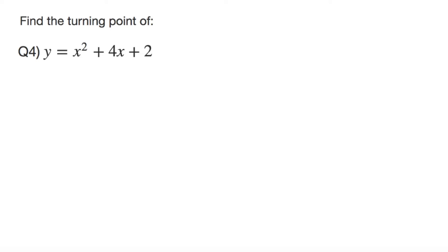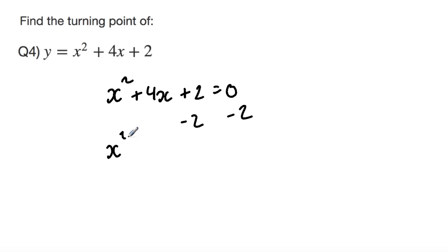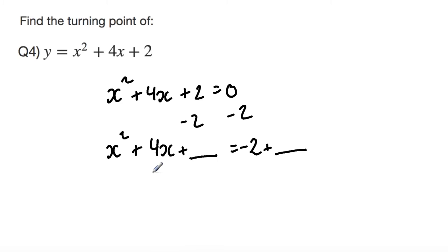Question 4: find the turning point of y equals x squared plus 4x plus 2. The first thing I'm going to do is equate the quadratic to 0: x squared plus 4x plus 2 equals 0. I'm then going to subtract 2 from both sides. To find the completing-the-square number, we take the b coefficient (4) divided by 2, which is 2, and square it to get 4. Therefore the underline number is 4.